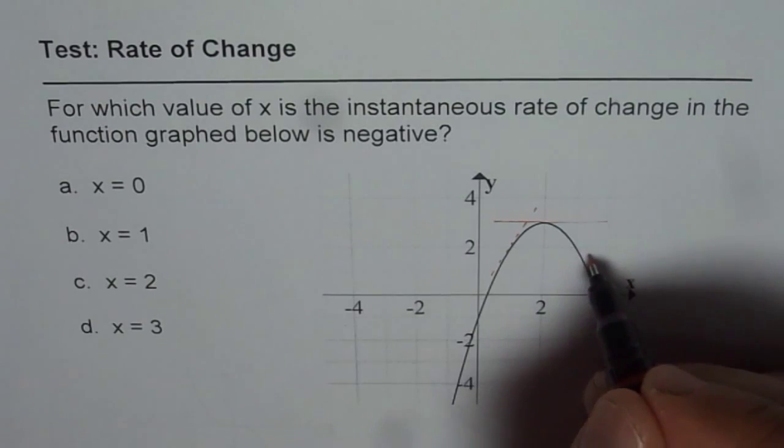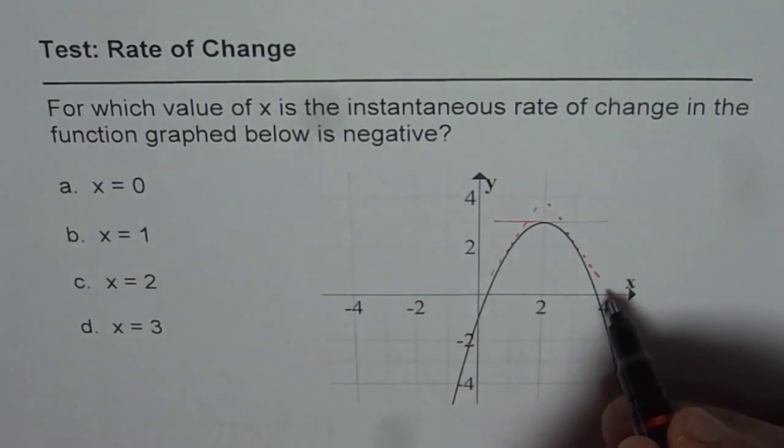On the right side, if you draw a tangent line, it is falling. Therefore, it is negative.